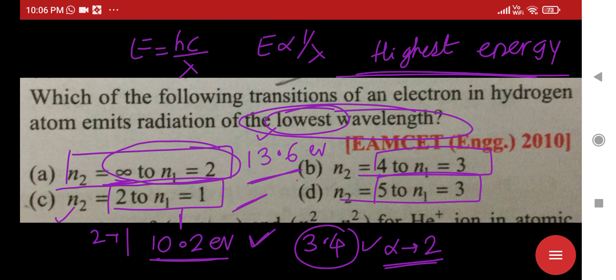When electron jumps from second level to first level the energy released will be maximum. That means wavelength is going to be minimum. Thank you.